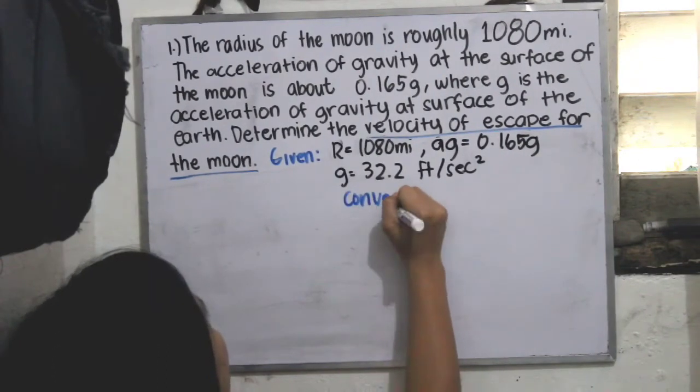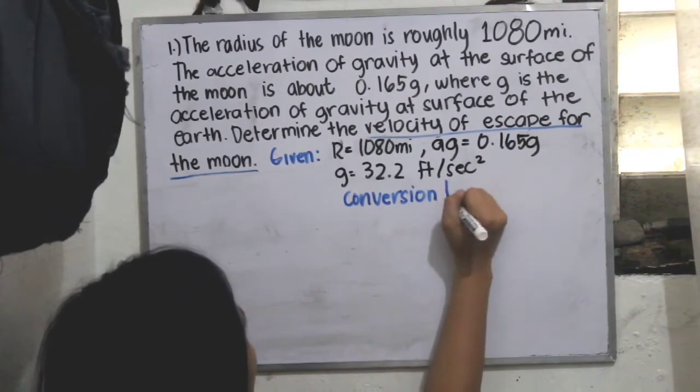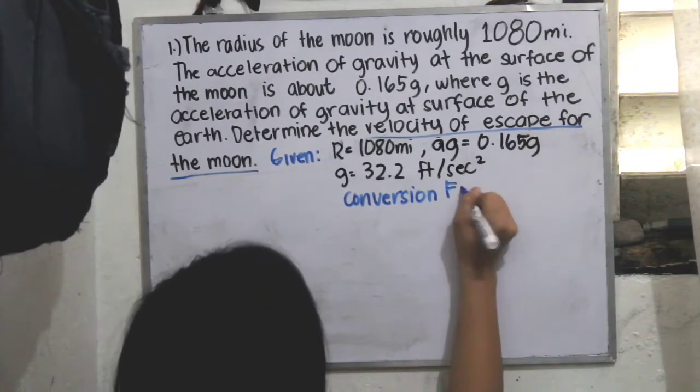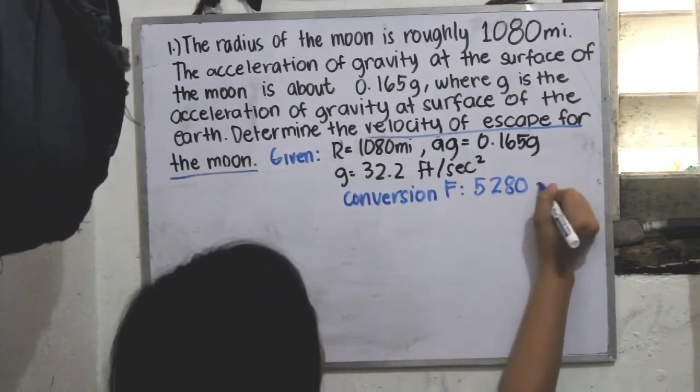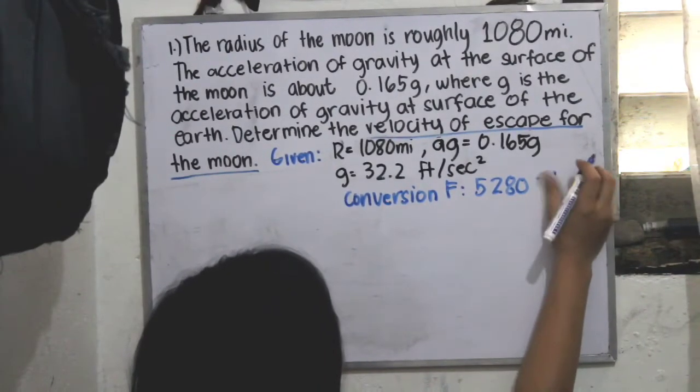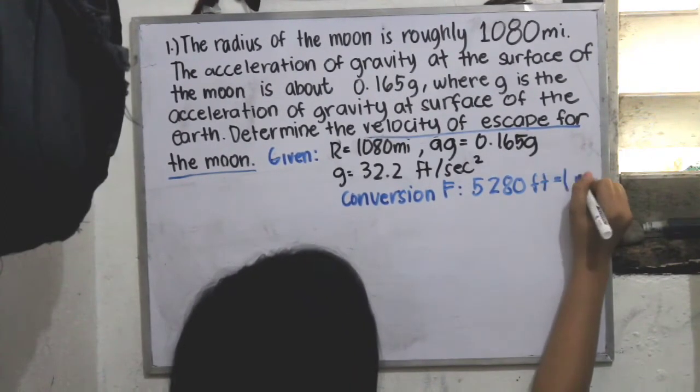So we need to convert it from miles to feet to be able to obtain the final answer in feet. And our conversion factor is 5,280 feet is equal to 1 mile.